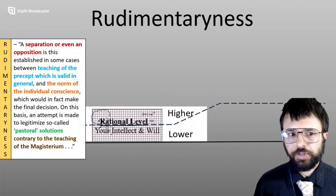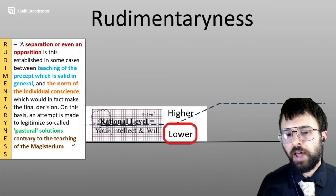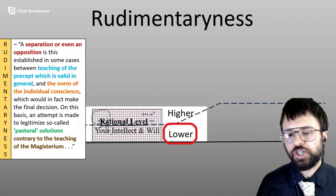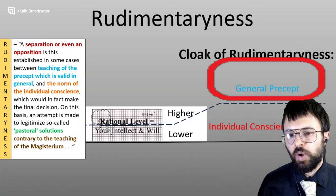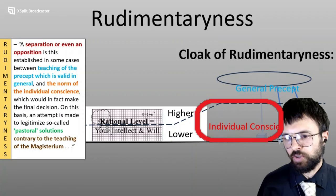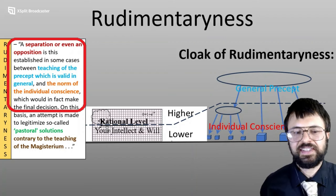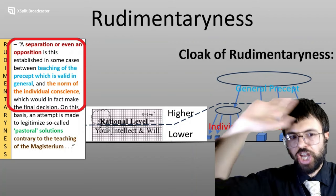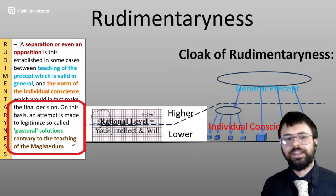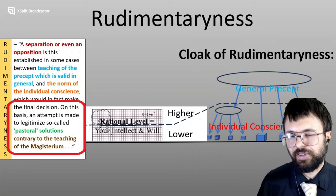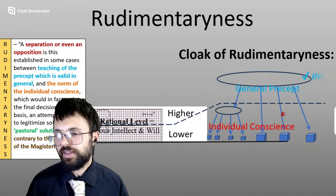Next, rudimentariness. This is going to distinguish the higher level of reason from the lower level of reason. It dwells upon the lower half of rationality where application of higher principles and top values gets applied down to actual situations — general precepts and then individual conscience operating underneath. John Paul II writes: 'A separation or even an opposition is thus established in some cases between the teaching of the precept, which is valid in general, and the norm of the individual conscience, which would in fact make the final decision.' On this basis an attempt is made to legitimize so-called pastoral solutions contrary to the teaching of the magisterium.